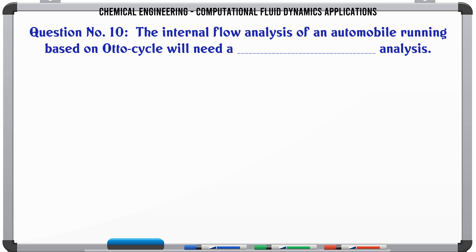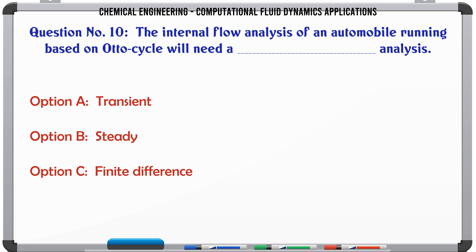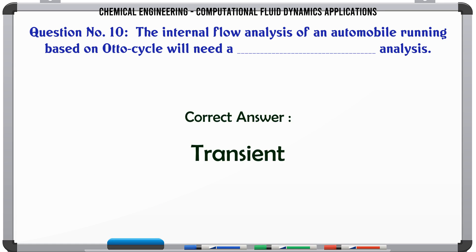The internal flow analysis of an automobile running based on auto cycle will need what type of analysis? A. Transient. B. Steady. C. Finite difference. D. Finite element. The correct answer is: transient.